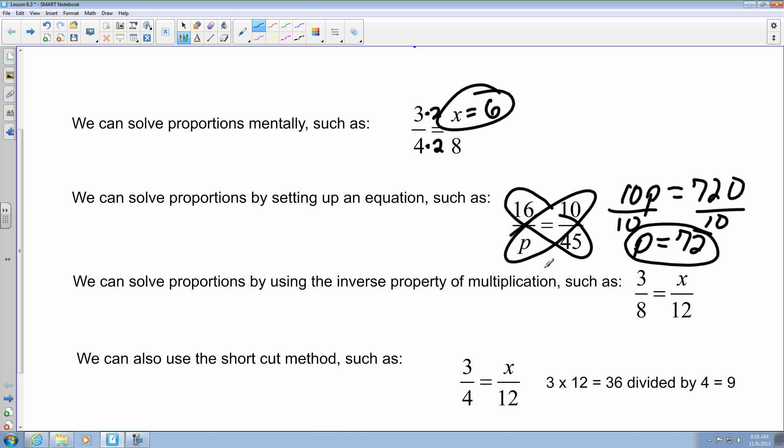The last one is you can solve proportions by using the inverse property of multiplication. So essentially, since we have x over 12, we can eliminate the 12 by multiplying both sides by its reciprocal, which is 12 over 1, which then crosses out this 12 here, which just leaves me with x on that right-hand side. Then all I have to do is, I can cancel out the 12 and the 8. I can divide the 8 by 4, which gives me 2.